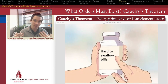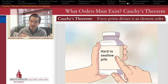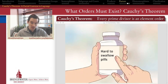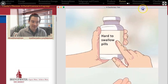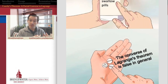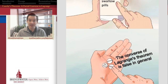By now we all have a healthy respect for Lagrange's theorem — that theorem which says that in a finite group, the order of any subgroup is a divisor of the order of the whole group. That is such a useful fact and we use it all over the place. The problem with Lagrange's theorem is that its converse is not in general true. In other words, if you give me a divisor of the order of a big group, I cannot necessarily provide you with an element or a subgroup that realizes that order.